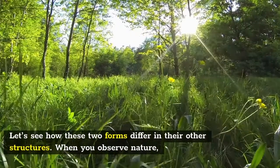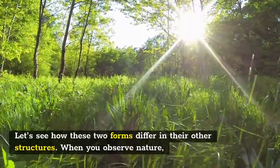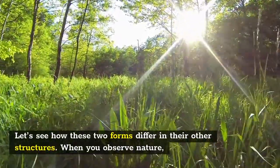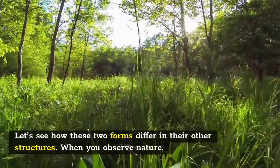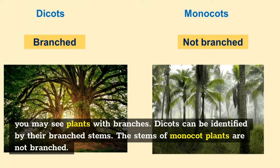Let's see how these two forms differ in their other structures. When you observe nature, you may see plants with branches. Dicots can be identified by their branched stems. The stems of monocot plants are not branched.